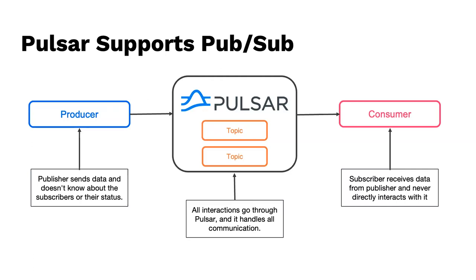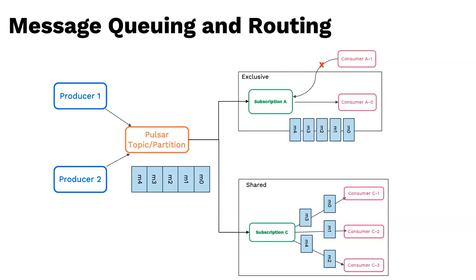All interactions go through the broker layer in Apache Pulsar. There are four subscription types; I'll focus on two that support queuing and routing. The exclusive subscription means I want a copy of every single message — think of it like a newspaper subscription where every consumer gets their own copy every day. If a second consumer tries to interject and says it wants some messages, it's rejected.